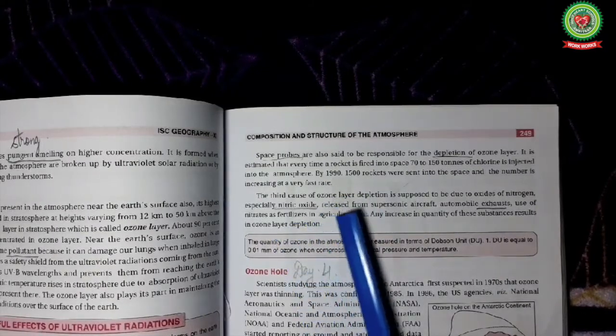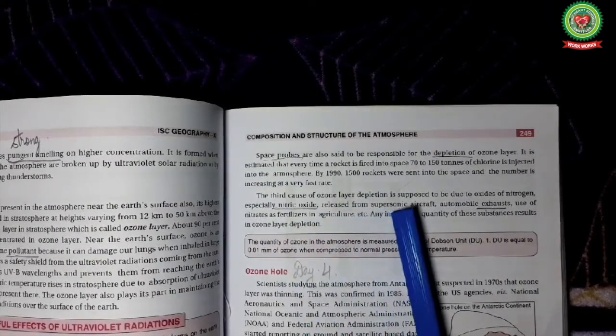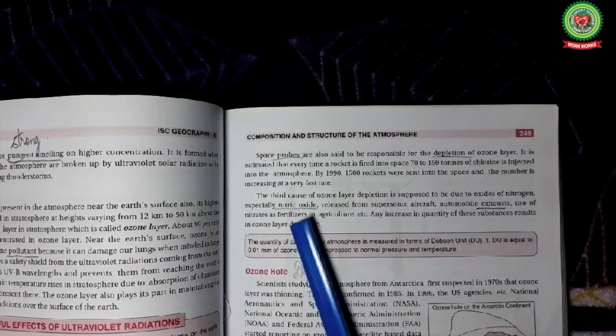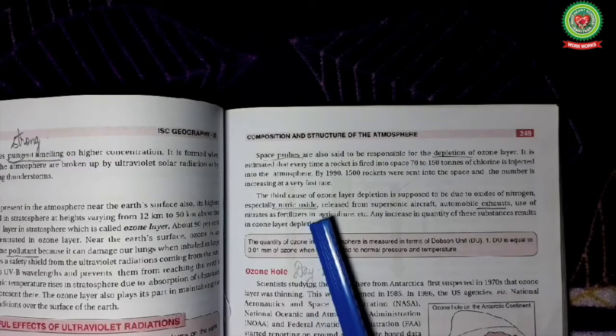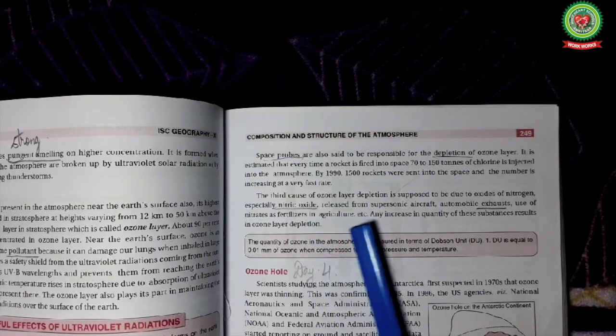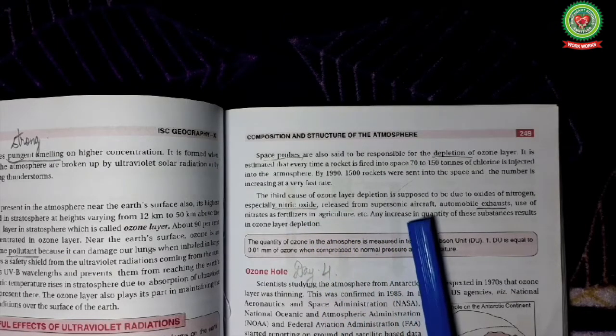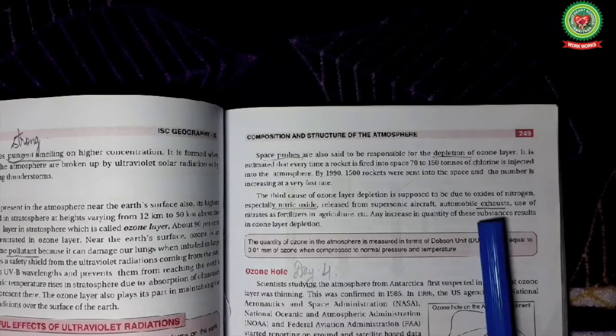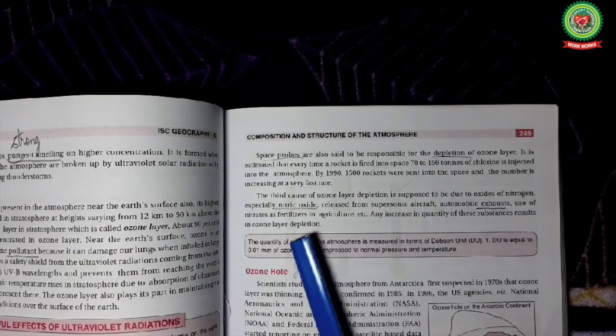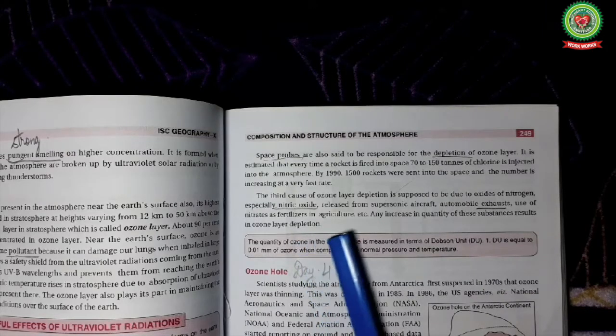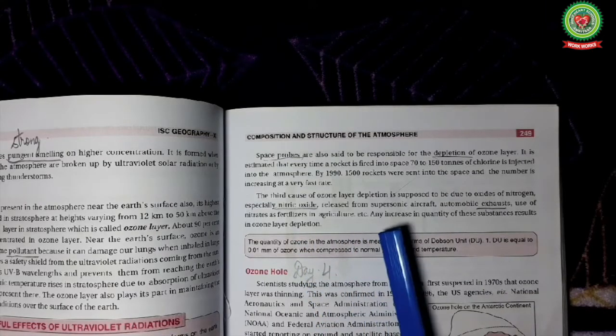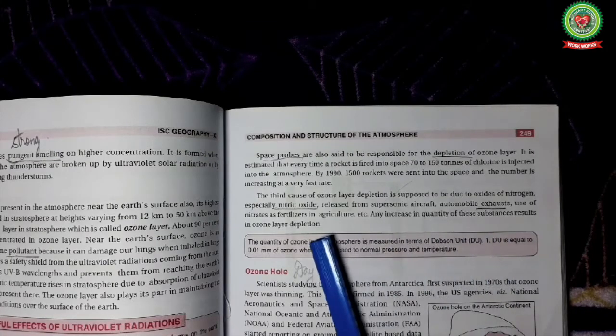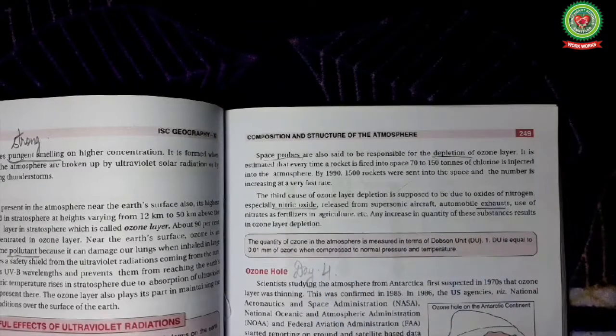The third cause of ozone layer depletion is supposed to be due to oxides of nitrogen, especially nitric oxide released from supersonic aircraft, automobile exhaust, use of nitrates as fertilizers in agriculture, etc. Any increase in the quantity of these substances results in the depletion of ozone layer.